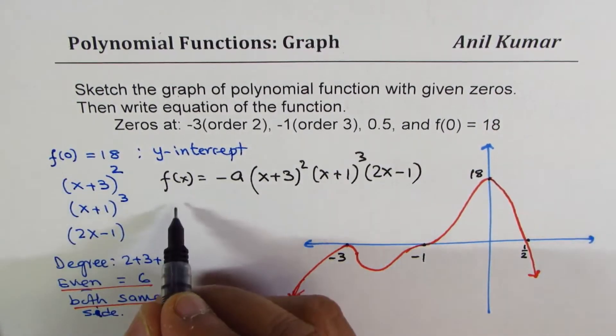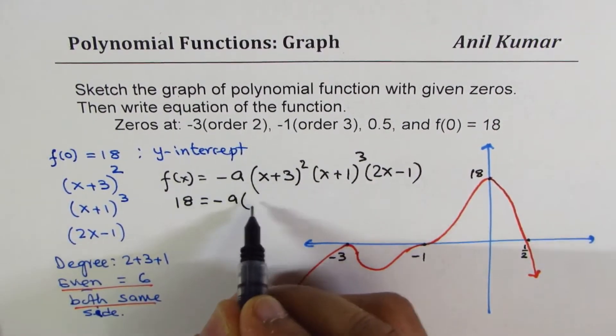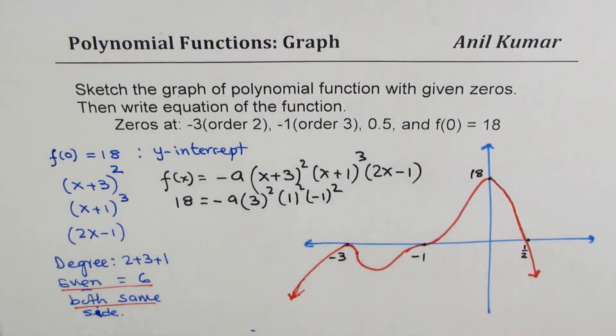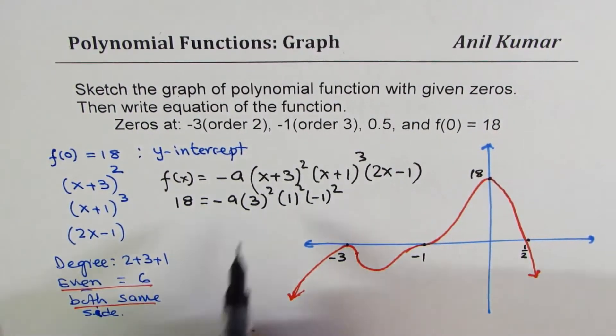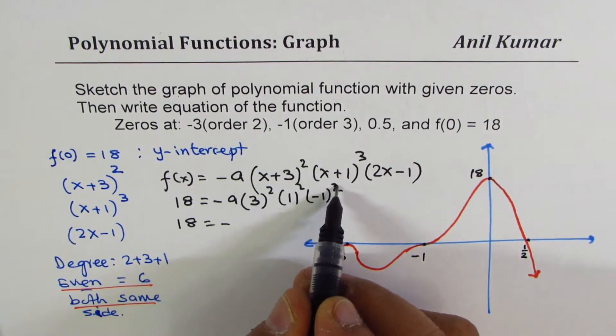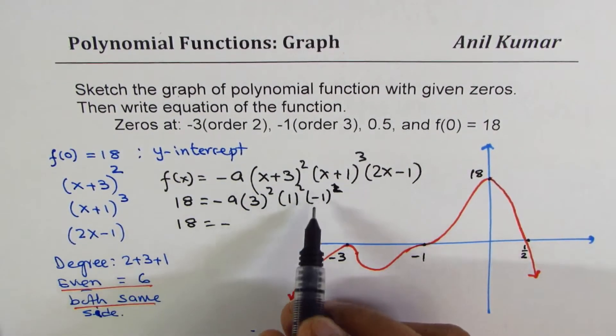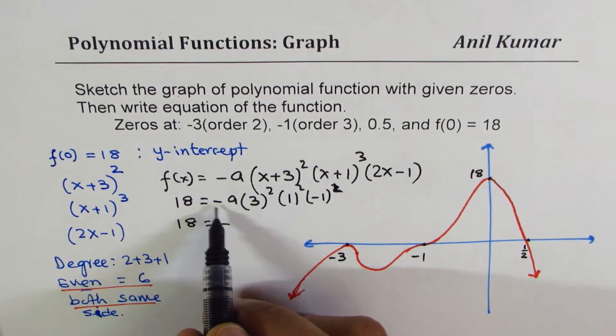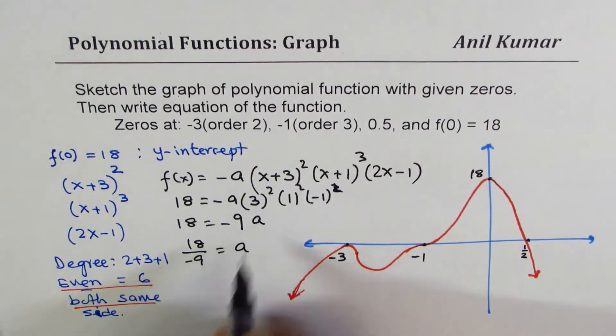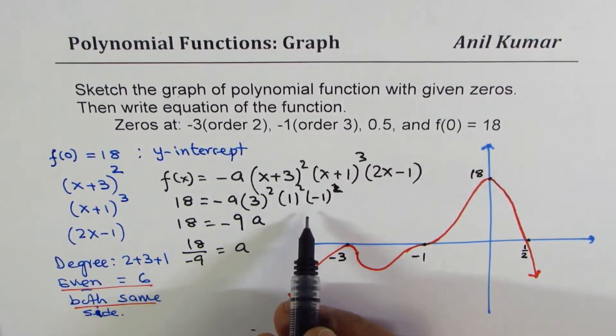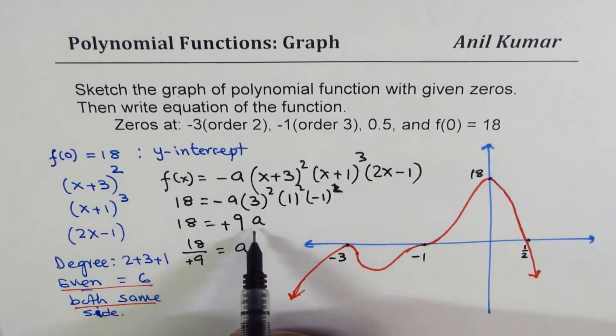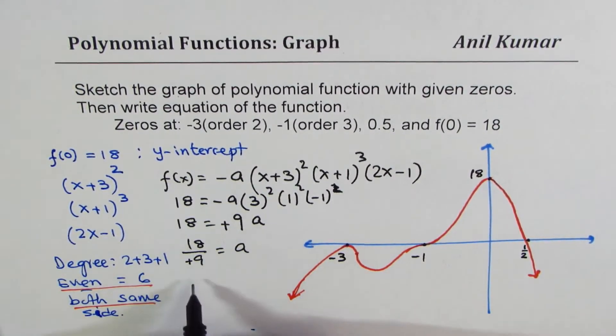Since f of 0 is 18, we can write this as 18 equals to minus a, 3 square times 1 cube times minus 1. Now, that is 9. So, we have 18 equals to minus... Now, this negative becomes, 2x minus 1 is just minus 1. So, this negative makes it positive. So, 3 square is 9, we get 9a, or 18 over 9 gives the value of a, which is equal to... We already took minus outside. So, 18 over 9 gives us 2.